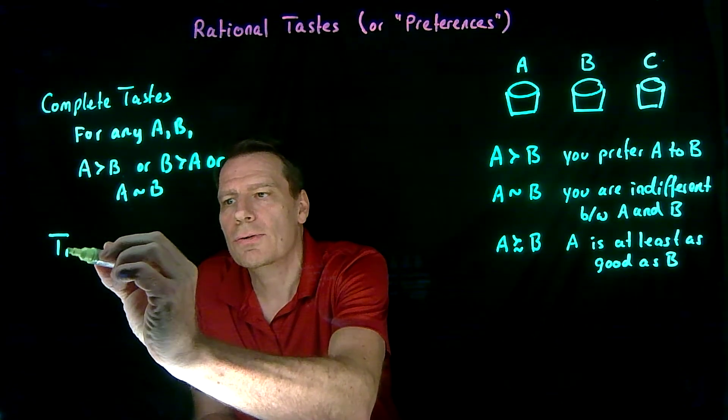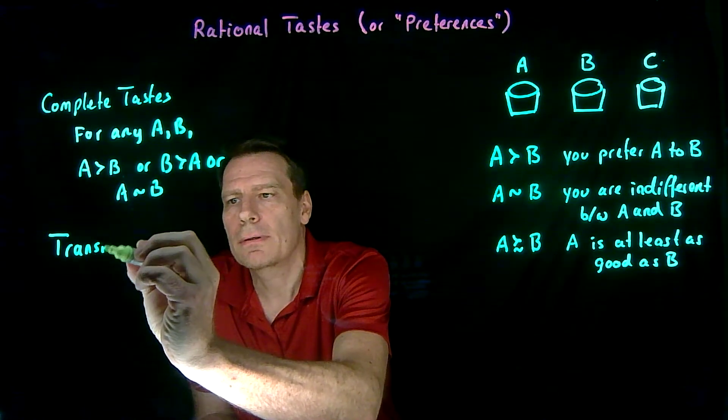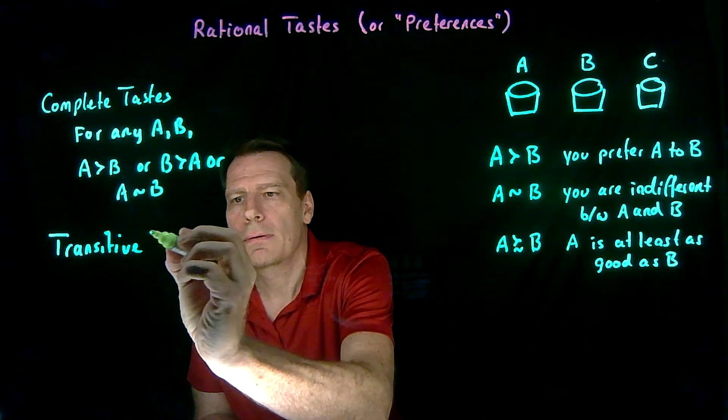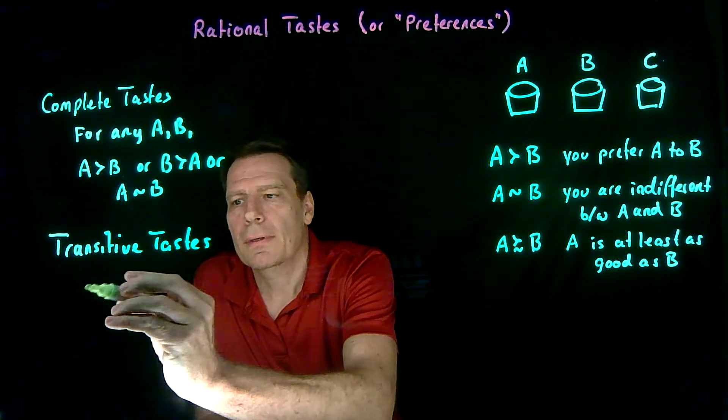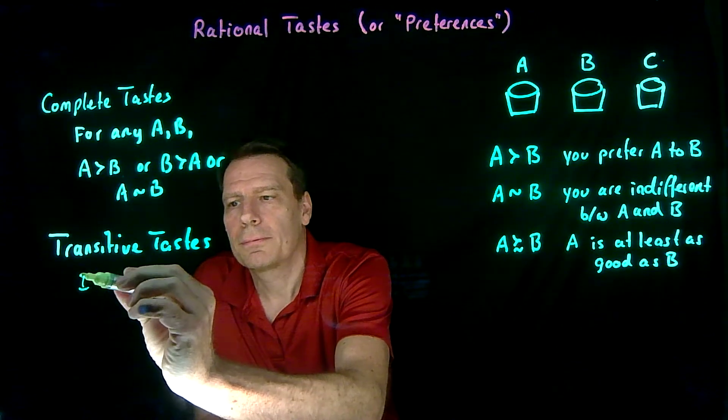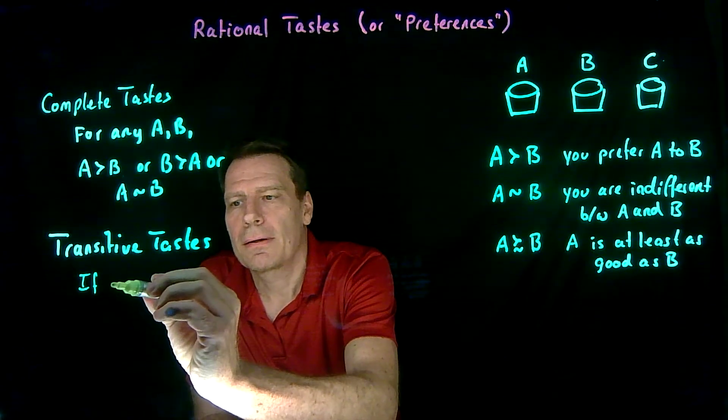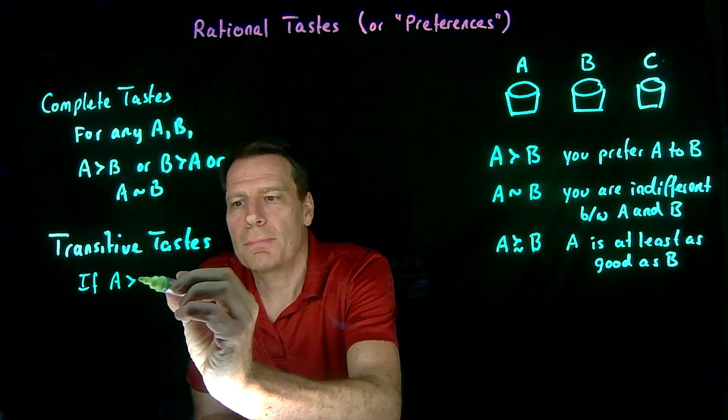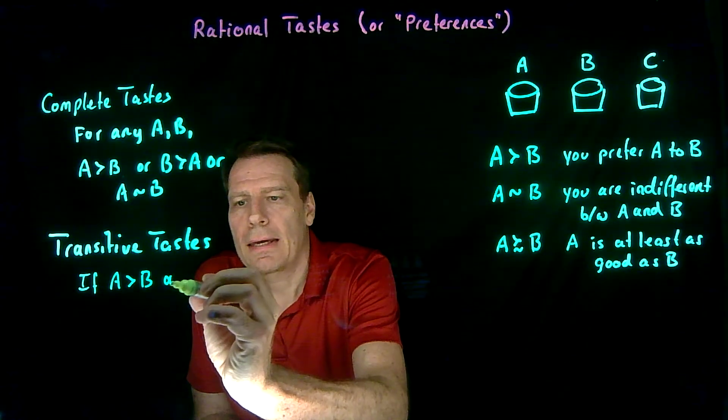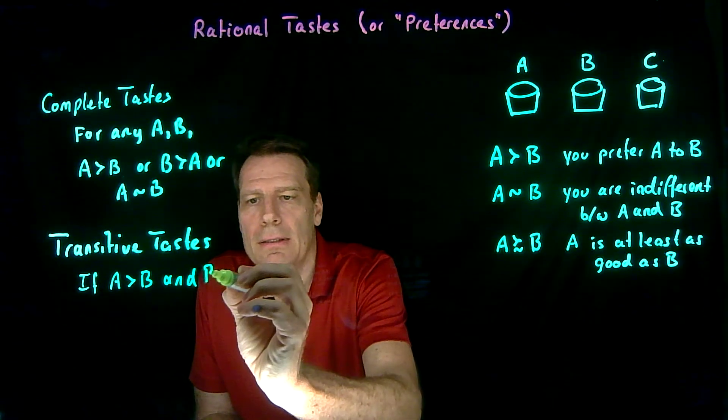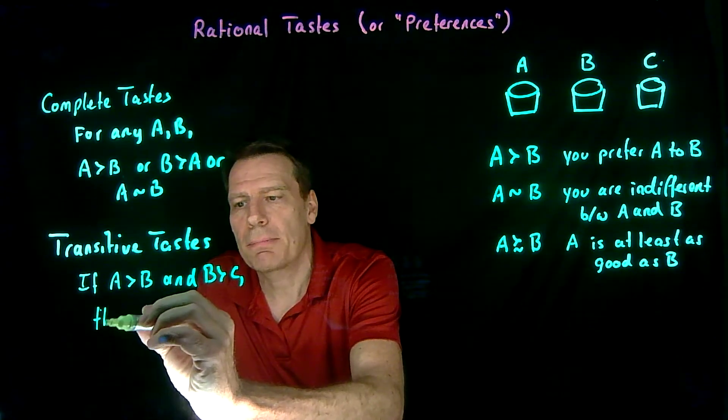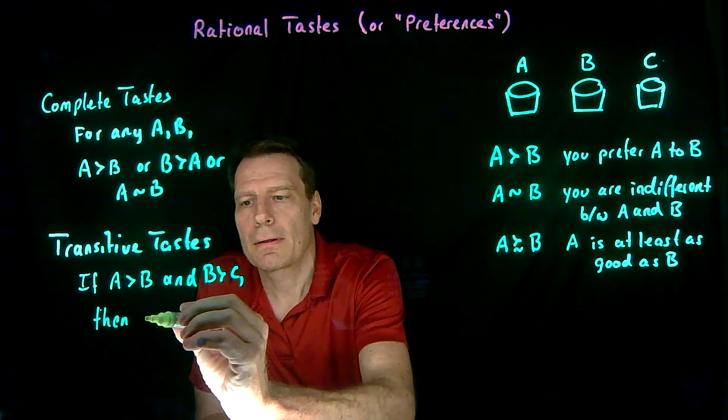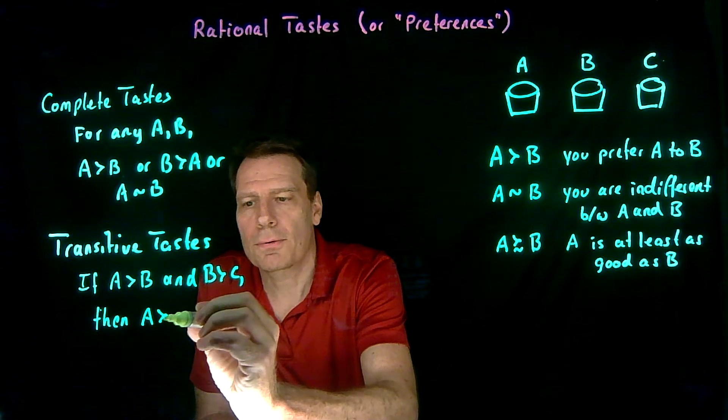We're going to say that your tastes are transitive if we can say that when A is preferred to B and B is preferred to C, then this implies that A is preferred to C.